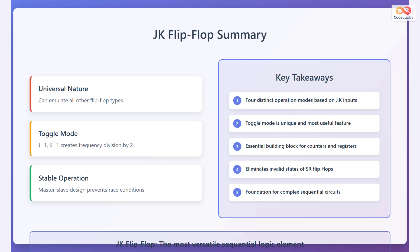Key takeaways: four distinct operation modes based on J and K inputs; the toggle mode is unique and the most useful feature; it is an essential building block for counters and registers; it eliminates the invalid states of SR flip-flops; and it is a foundation for complex sequential circuits. The JK flip-flop is the most versatile sequential logic element.